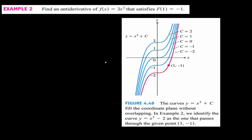In example 2, you have a family of curves of x cubed — x cubed minus 2, x cubed minus 1, x cubed, x cubed plus 1, x cubed plus 2 — because these are all the y-intercepts. Now it says find the specific antiderivative, little f of x, that satisfies F(1) = -1. That means the particular function passes through the point (1, -1), which turns out to be y equal to x cubed minus 2.